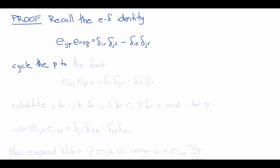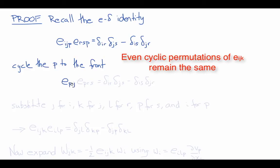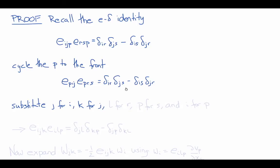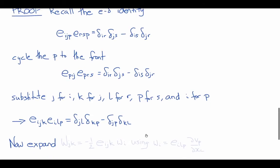We need to rearrange this to put it in a form that's more useful for us. So we're going to recall that cyclic permutations of E are the same. So if we'll cycle p to the front of this expression of each of these, then we'll get Epij times Eprs must also equal delta ir delta js minus delta is delta jr. And now we're going to substitute j for i, k for j, l for r, p for s, and i for p. So the same expression, just using different set of indices, will become Eijk Eilp equals delta jl delta kp minus delta jp delta kl.